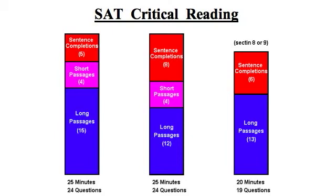To review, the SAT consists of three scores: writing, critical reading, and math, each scored on a scale of 200 to 800, for a possible 2,400 points.